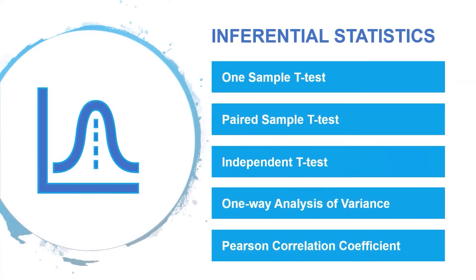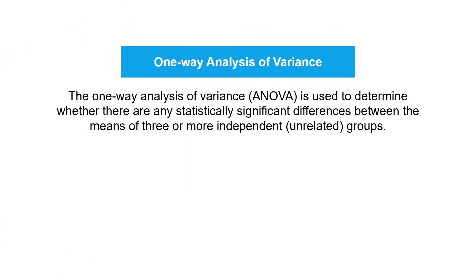The fourth test is the one-way analysis of variance. Also known as one-way ANOVA, it is used to determine whether there are any statistically significant differences between the means of three or more independent or unrelated groups.